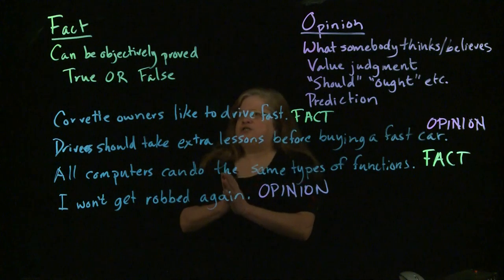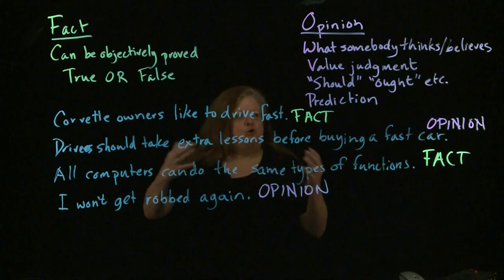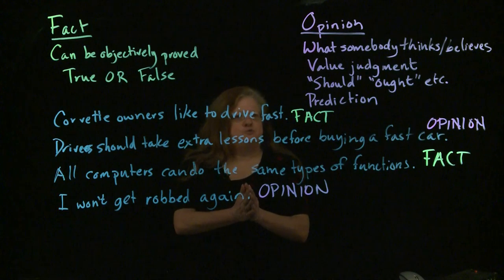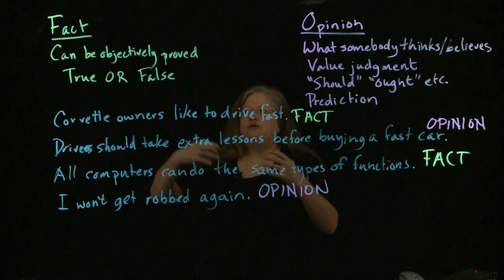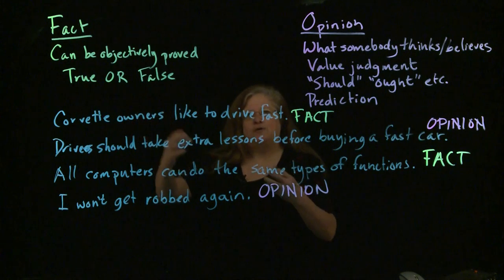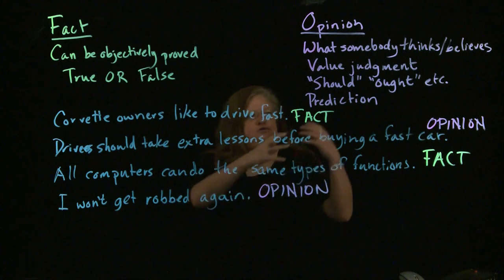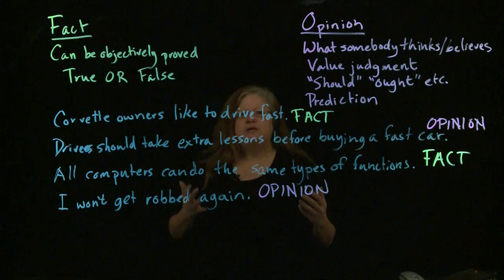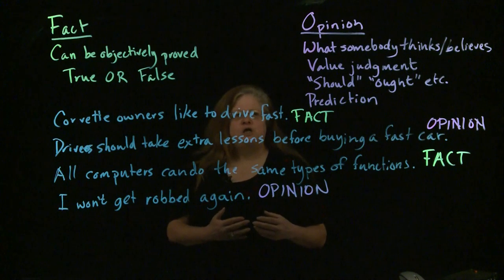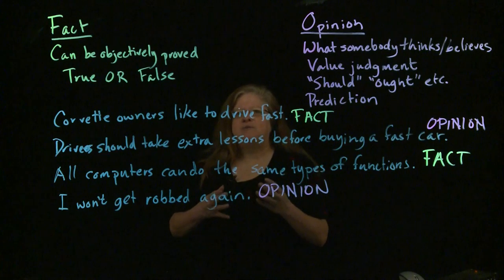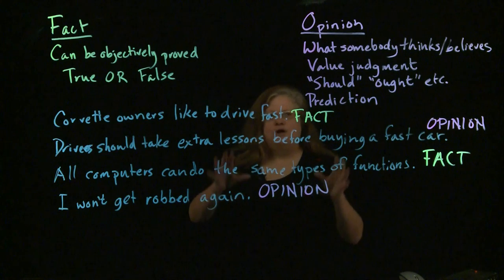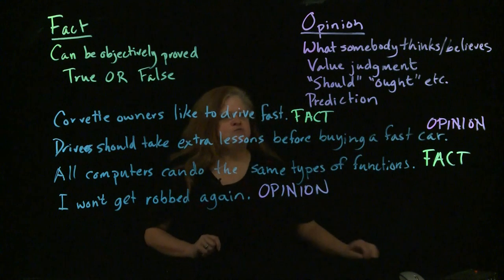So this is some important stuff to know when you're reading, when you're evaluating the stuff that you're reading. You want to make sure to distinguish things that are facts that you can go out and prove or you can look up, things that are opinions that are just simply what somebody thinks or believes. And so the solidness of those is not objective. So when you're reading, watch out for those differences.